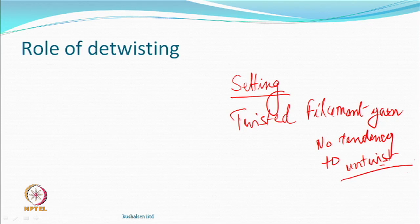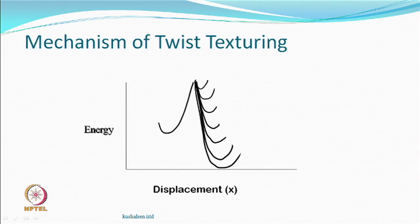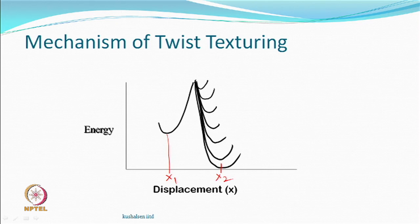What we get at the end of setting is a multifilament yarn which has been twisted and subjected to some setting operation. This yarn does not have any tendency to untwist, but it is not a textured yarn. So what do we do?